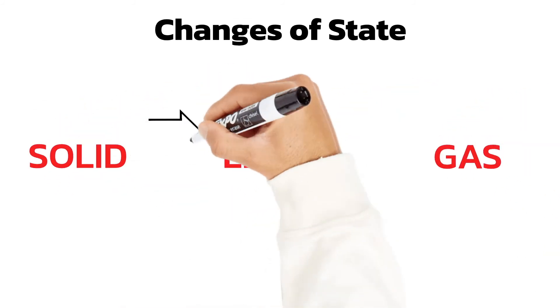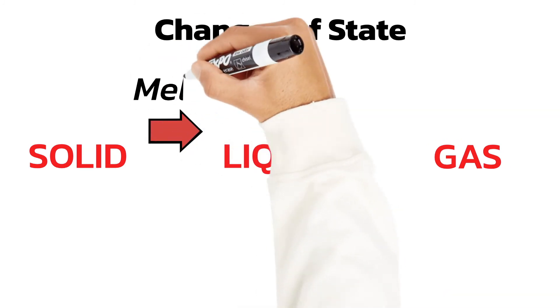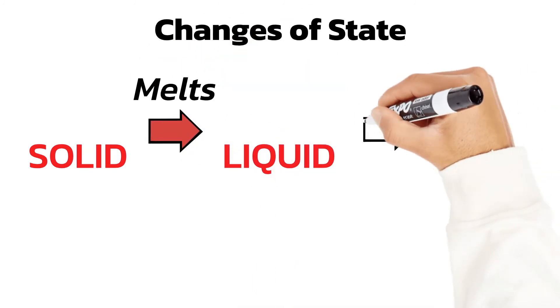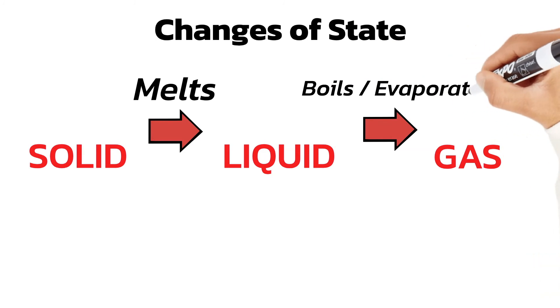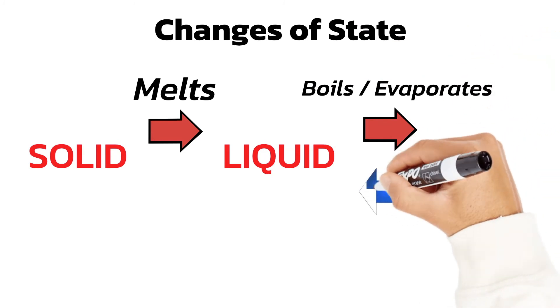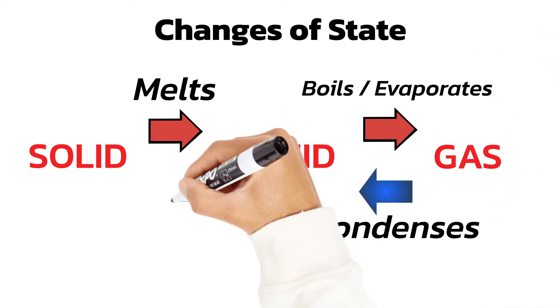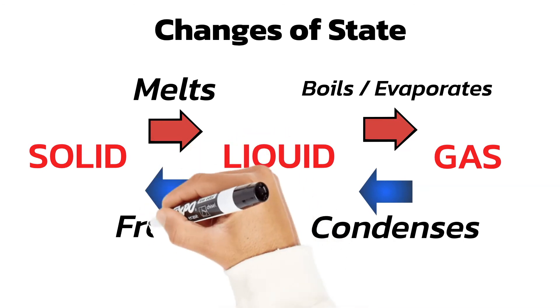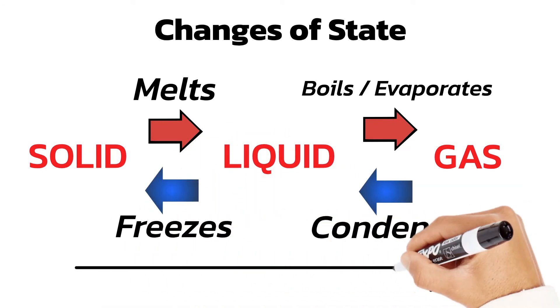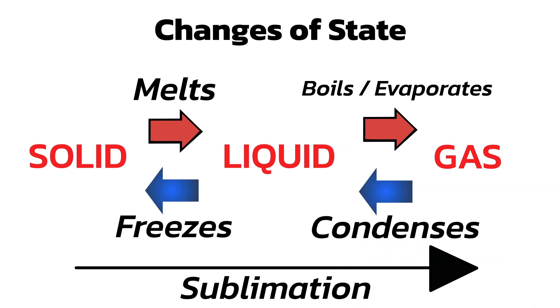In summary, melting occurs when a solid is heated and turns into a liquid. A liquid turning into a gas can happen through either boiling or evaporation. As a gas is cooled back down, it condenses back into a liquid. A liquid freezes to become a solid. And finally, the process of a solid turning directly into a gas is called sublimation.